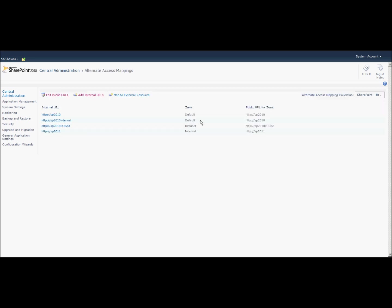If you have a look here, you can see that the Default zone correspondingly has two internal URLs and one public URL. That is, when you type in HTTP SP2010 Internal or HTTP SP2010 in the URL in the browser, it automatically changes to HTTP SP2010.